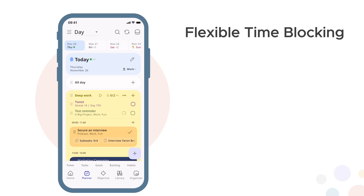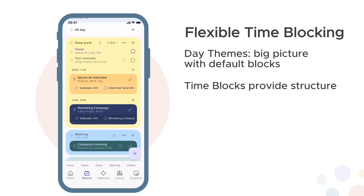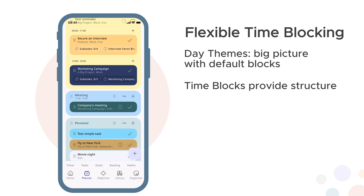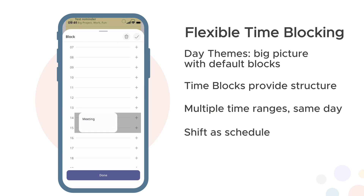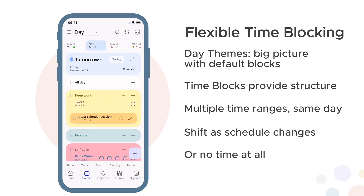Flexible time blocking. Traditional time blocking uses rigid blocks with exact start and end times. Journalit makes blocks flexible. Day themes like work, weekend and holiday provide the big picture. Time blocks like deep work, meetings and personal provide structure. But here's the key: blocks can have multiple time ranges on the same day, shift as your schedule changes, or have no time at all. Your sessions land in blocks for organisation without the rigidity.